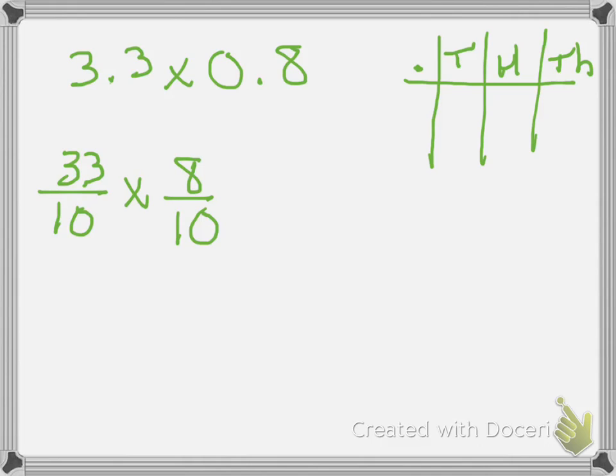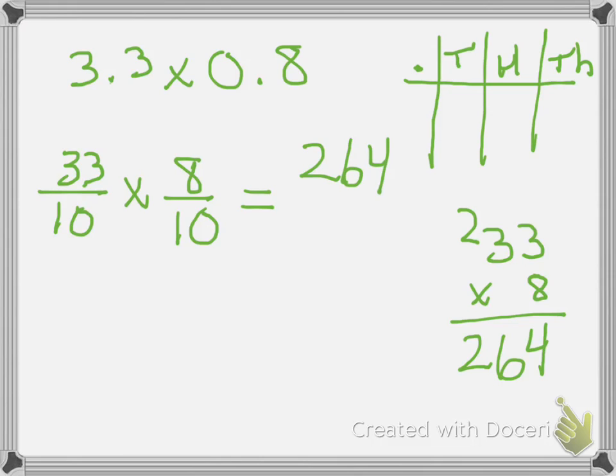So now we're not cross-simplifying, we're just going to multiply across. So 33 times 8, I'm going to solve it on the side to make sure that I do not make any errors. 8 times 3 is 24, carry the 2, 8 times 3 is 24, plus 2 more is 26. So I get 264, 10 times 10 is 100. Now I have to write 264 over 100.